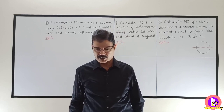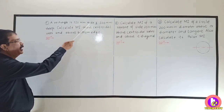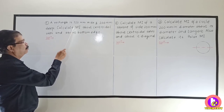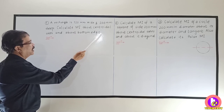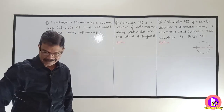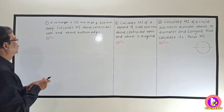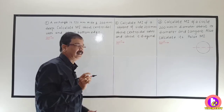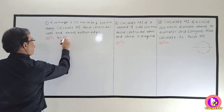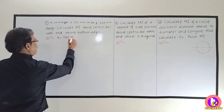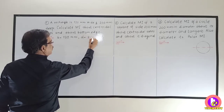Let us go for the first example. A rectangle is 120 mm wide and 200 mm deep. Calculate Moment of Inertia about the centroidal axis and about the bottom edge. Now, let us see what is given — this is the standard case of a rectangle. B is equal to 120 mm and D is equal to 200 mm.